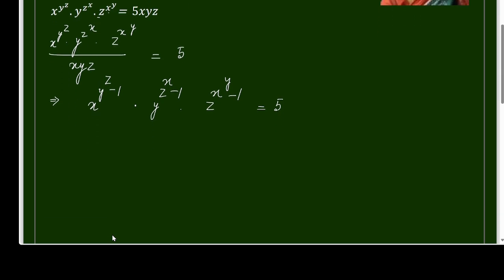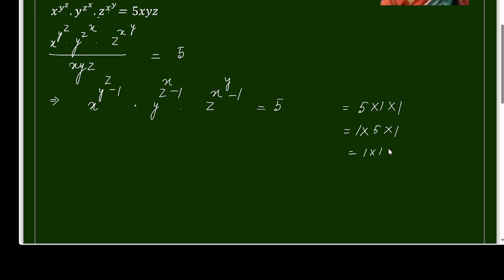Since 5 is a prime number, 5 can be written in the form 5 × 1 × 1. There are 3 factors on the left side, so I will express 5 as a product of 3 factors: either (5, 1, 1), or (1, 5, 1), or (1, 1, 5). So there are 3 options.